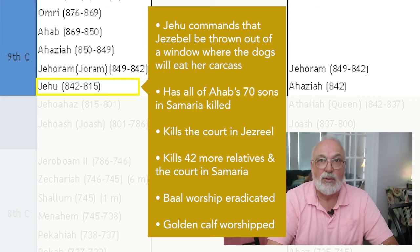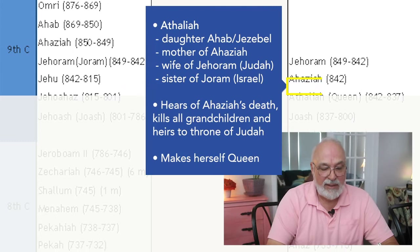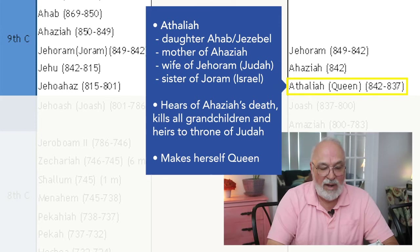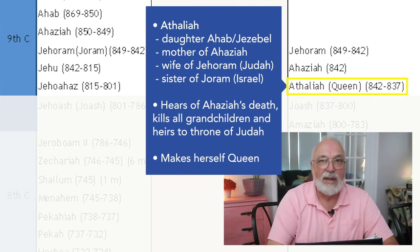Jehu makes his way to Samaria, kills 42 more relatives, and kills the court in Samaria. Baal worship is thus eradicated from Israel, but the golden calf worship still continues. Athaliah, who is the mother of Ahaziah and the wife of Jehoram of Judah, hears of Ahaziah's death and kills all the grandchildren who would be the heirs, placing herself in the queenship.